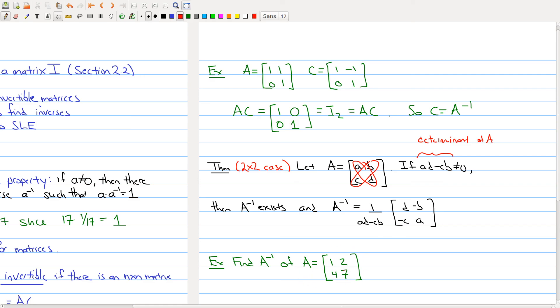For the two by two case things are nice; we have a formula. Let me end off the first part of our lecture giving you a matrix A, one two four seven. To reinforce the idea of this formula, find the inverse of this matrix. After the break I'll show you the answer.